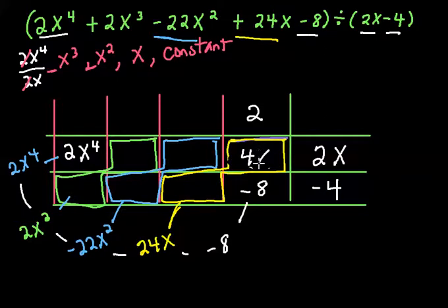Okay, 4x. Now, these two cells in yellow have to add up to positive 24x, okay? So I already have 4x in this cell. This one's going to have to be 20x. That's the only way they can add up to 24x. Okay, so if I have 20x here, I multiply negative 4 times something. That something's going to have to be negative 5x.